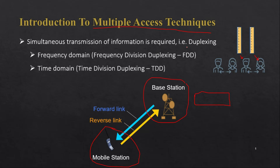In order to implement multiple access techniques, we typically require duplexing. Duplexing allows simultaneous transmission as well as reception of information, and that is very important.